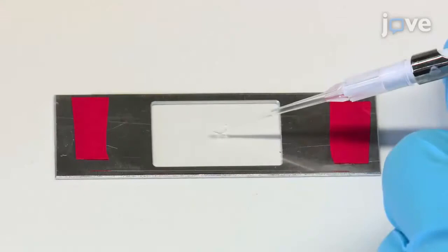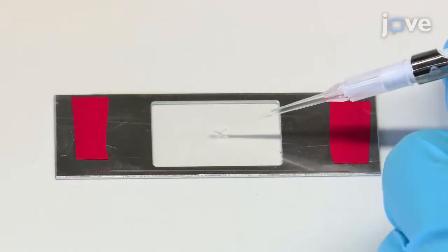Add 10 to 20 microliters of exponentially grown M. xanthus cells onto the cover slip.